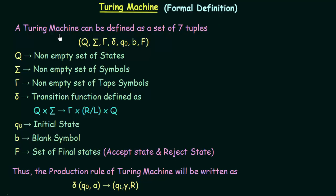A Turing machine can be defined as a set of 7 tuples, namely Q, Sigma, Tau, Del, Q0, B, and F.